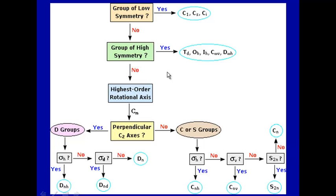We're going to determine how to determine the symmetry point group of a particular molecule using a flowchart. There are lots of other different kinds of flowcharts — you can find them online or in an introductory physical chemistry textbook. You don't really need to memorize this, and eventually as you work with symmetry, you'll learn to recognize from structure a particular kind of symmetry group.